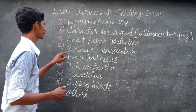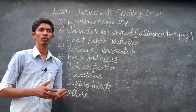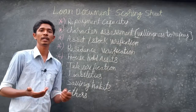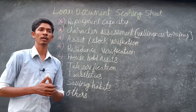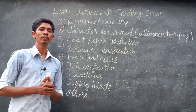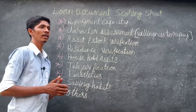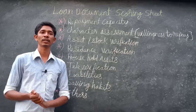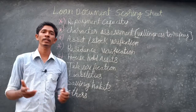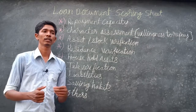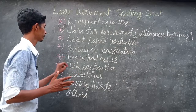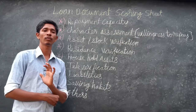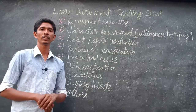For resident verification, the loan passing officer verifies whether it is the customer's own house by asking a neighboring third party — whether the customer built or bought the house and how many years they have stayed there. The officer also checks household assets: whether the house has meaningful assets or only basic items like one TV and one bed.